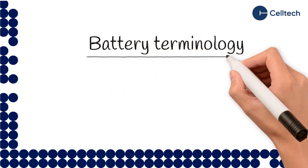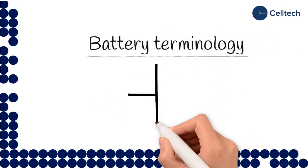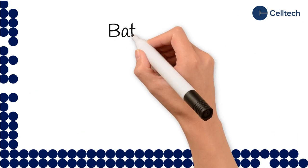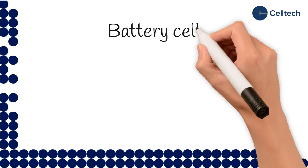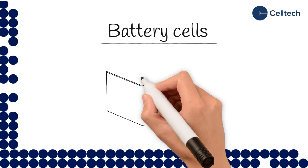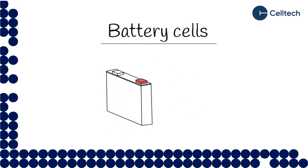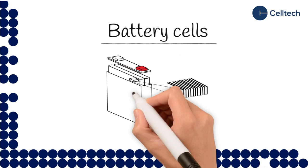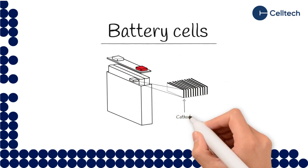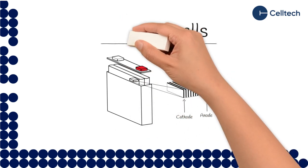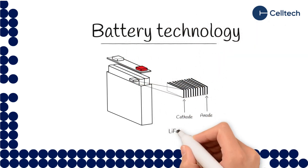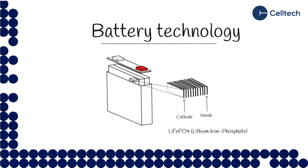In this video we are going through some basic battery terminology. Batteries are made of battery cells — they are containers that chemically store energy. The chemical energy is stored in the compounds that make up the cathode, anode, separator, and electrolyte. The battery technology is determined by the battery cells.